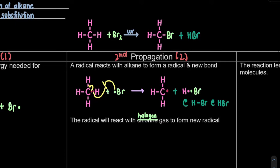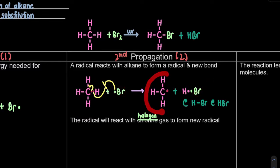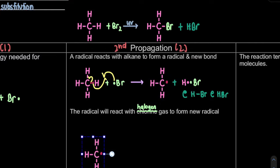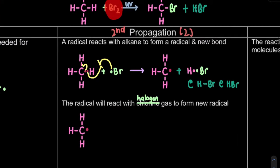Next step: propagation step two. The radical reacts with halogen gas to form a new radical. Now our carbon radical - formed from step one - is single and looking for a partner. It will react with Br2, our halogen gas. I would prefer to show two dots for the Br-Br bond so it's easier to show the movement of electrons.